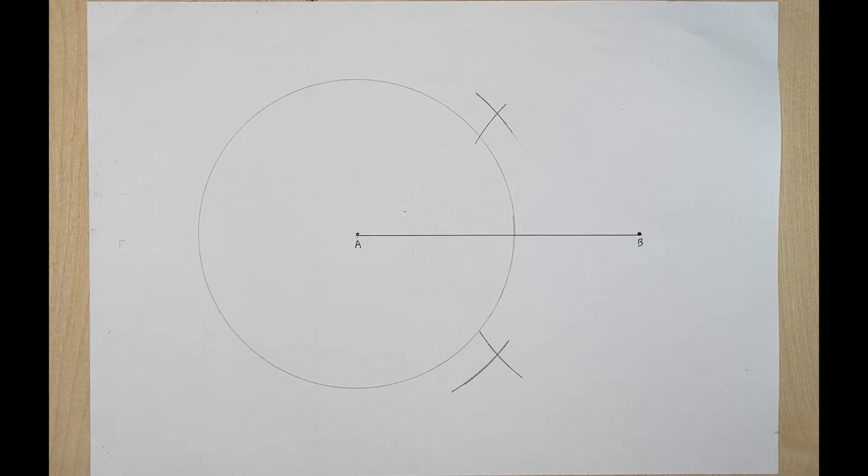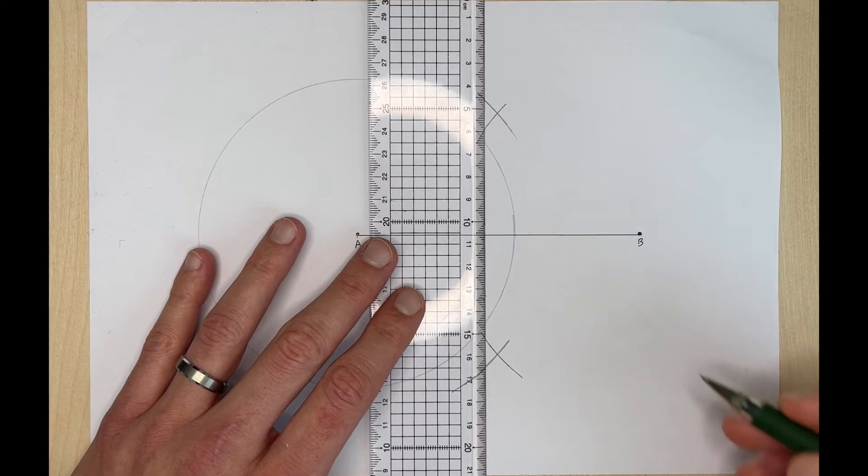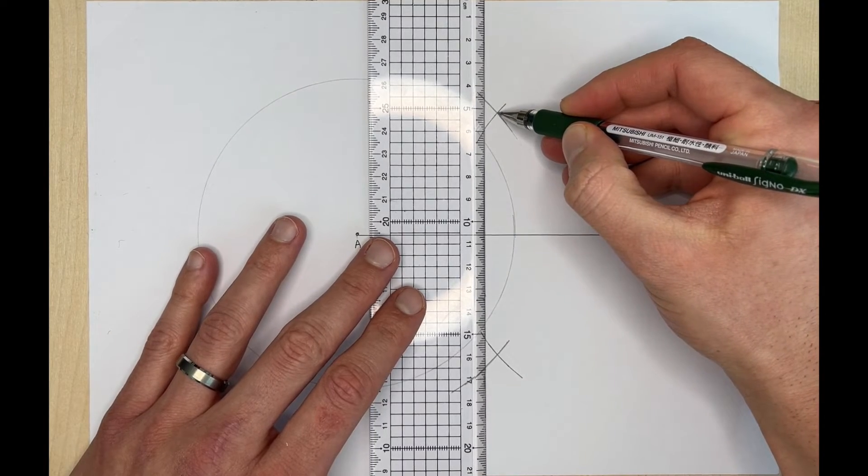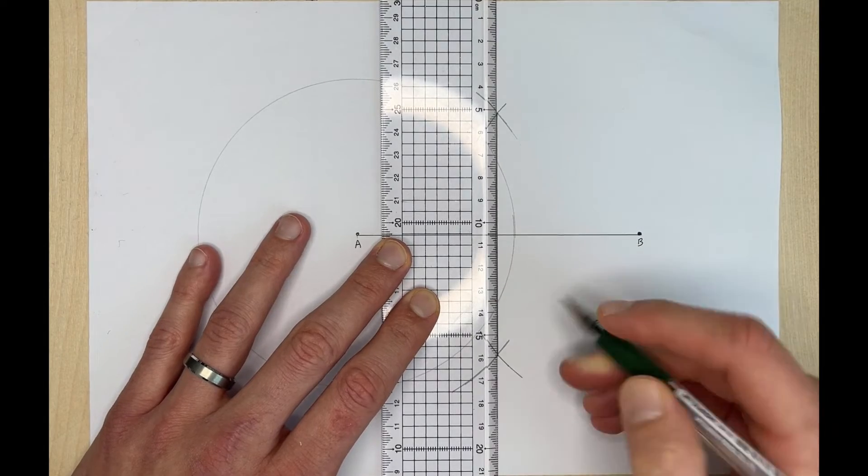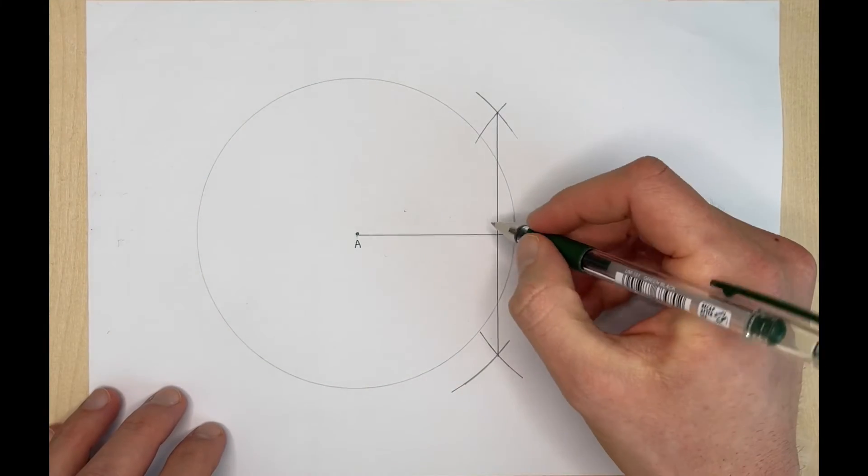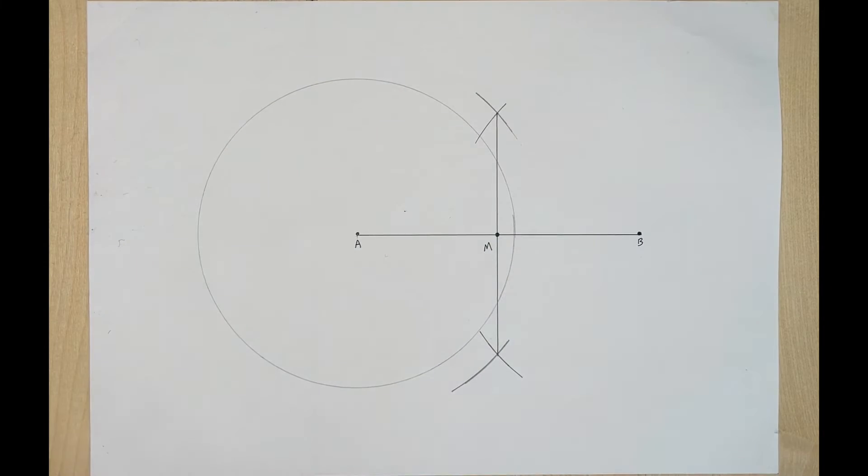Okay now we're going to take our straight edge and we're going to draw our perpendicular bisector here that's simply going to go from one of these intersections that we did with these two arcs to the other intersection. Now we can label this point right here and since this is our midpoint we'll call that point M.